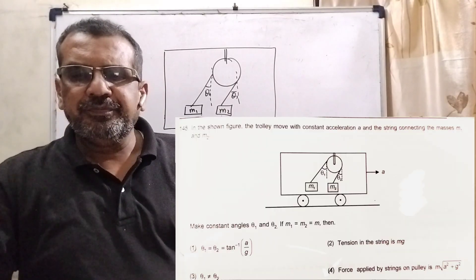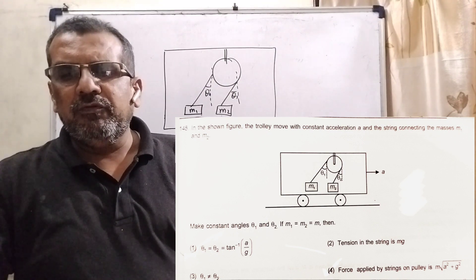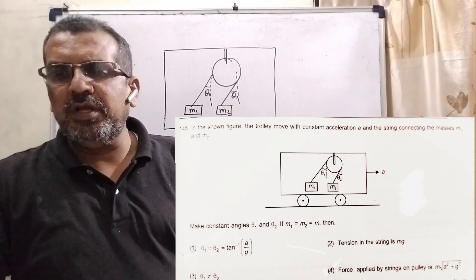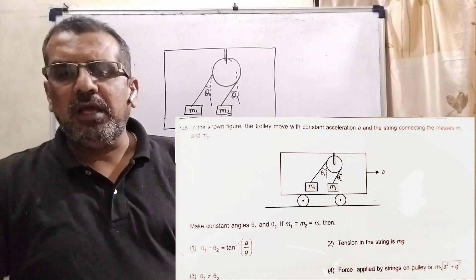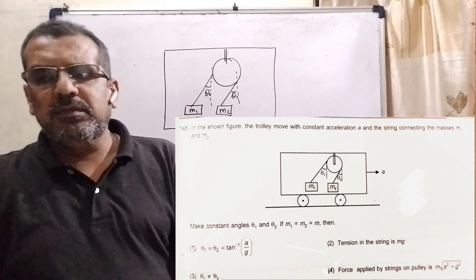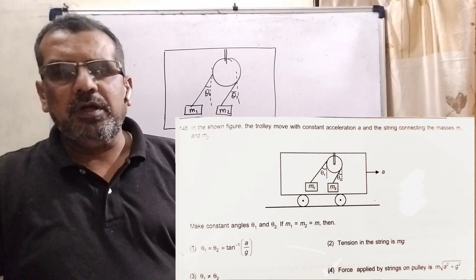Now here is the question. In the shown figure, the trolley moves with constant acceleration small a and the string connecting the masses m1 and m2 make constant angles theta1 and theta2. If m1 equal to m2 equal to small m, then we have to answer this multiple choice question.